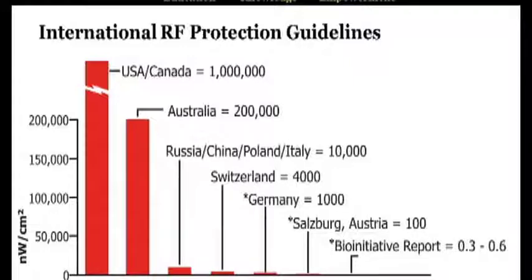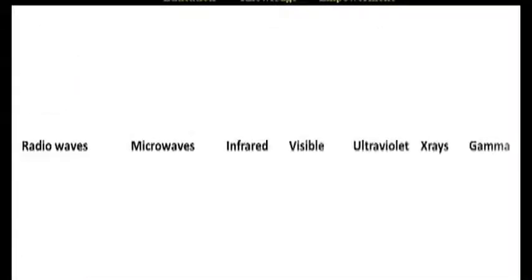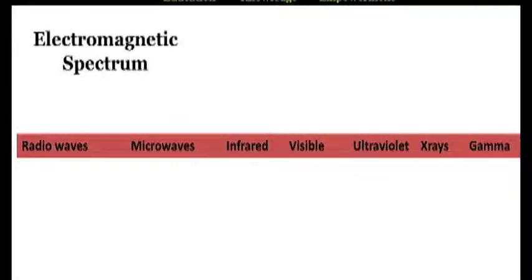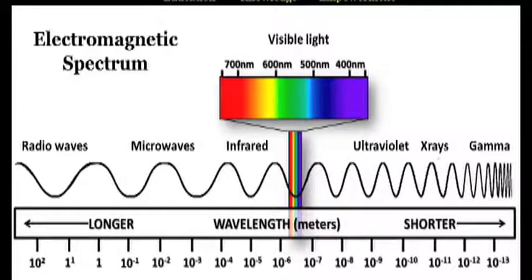But first, let's get some basic background understanding of what we're talking about. I'll do this by asking you a question. What do radio waves, microwaves, infrared, visible light, ultraviolet light, x-rays, and gamma rays all have in common? The answer is that they are all part of what we call the electromagnetic spectrum. And what makes them so different from each other? For example, what's the difference between the radiation from radio waves and the radiation from microwaves? The simple answer is wavelength and frequency.